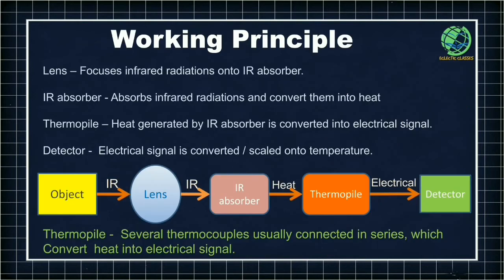Now, how does an infrared thermometer work? Any infrared thermometer consists of four things: a lens, an infrared absorber, a thermopile, and a detector. Let us see what is the role of each component.